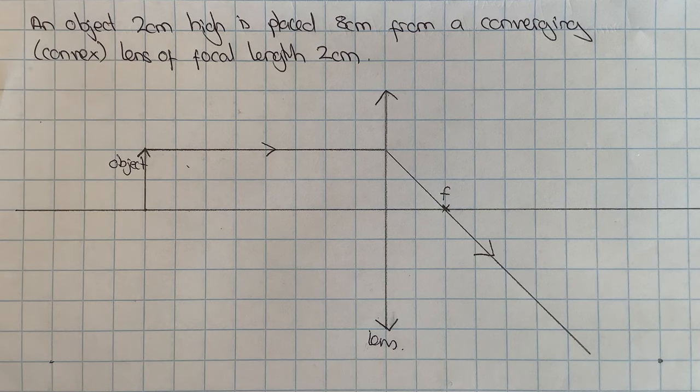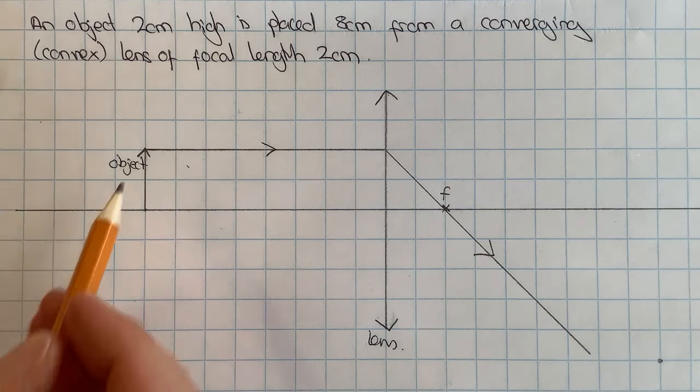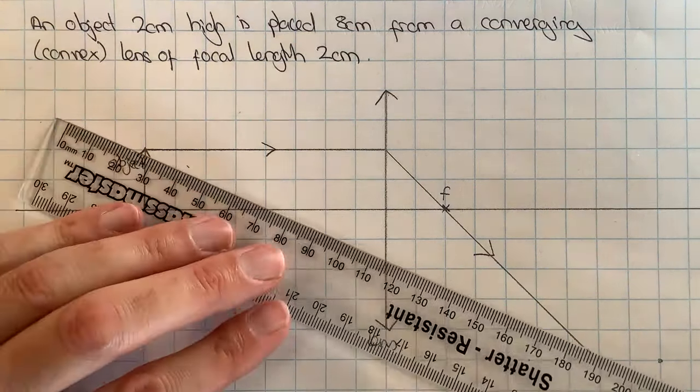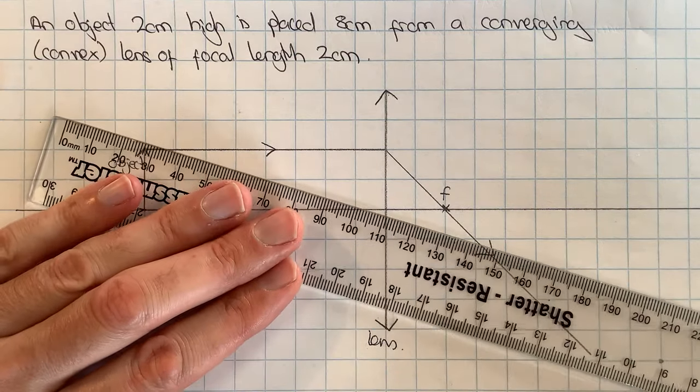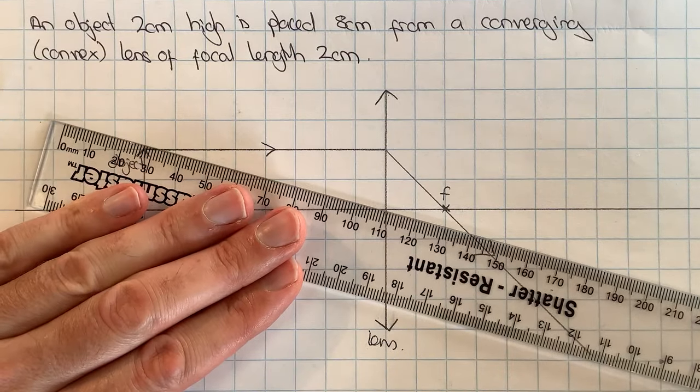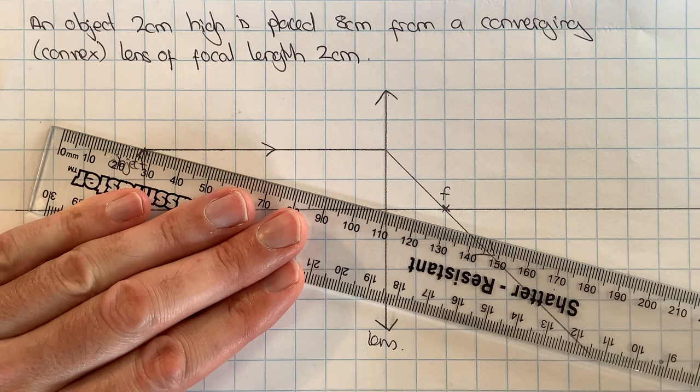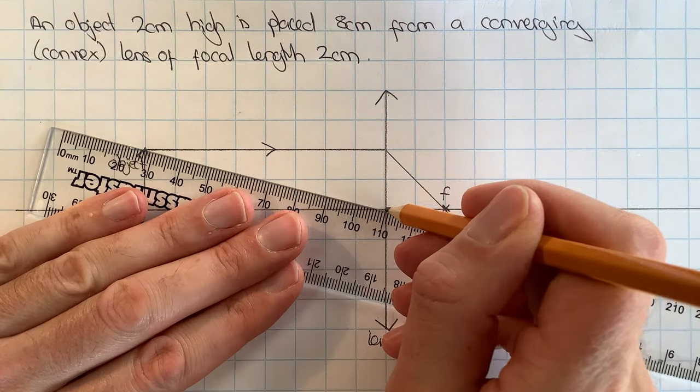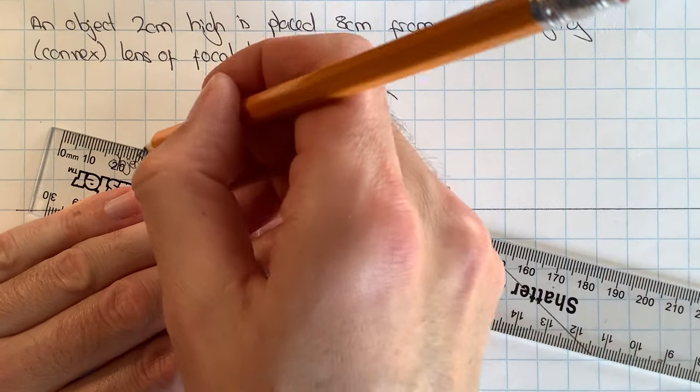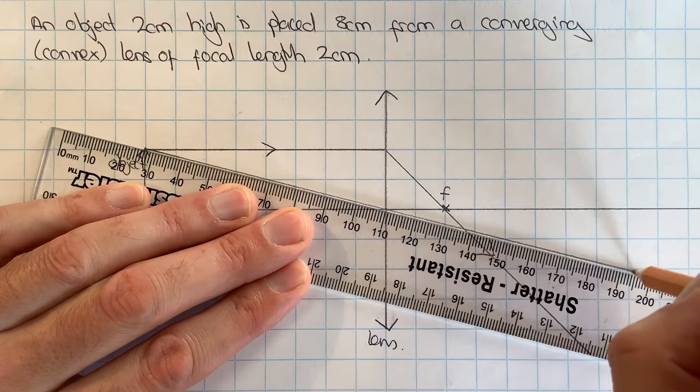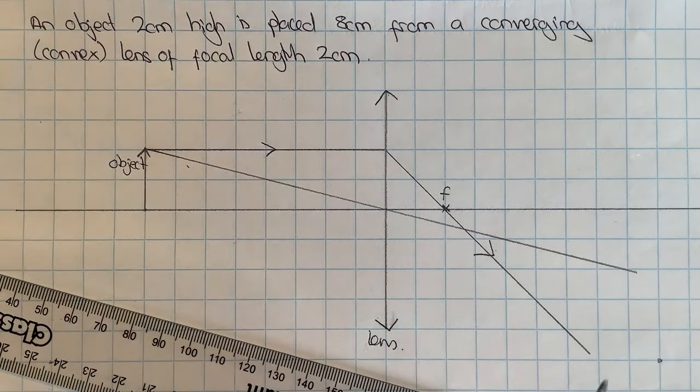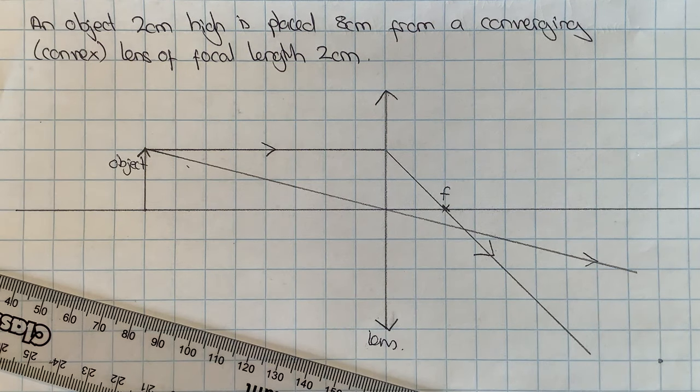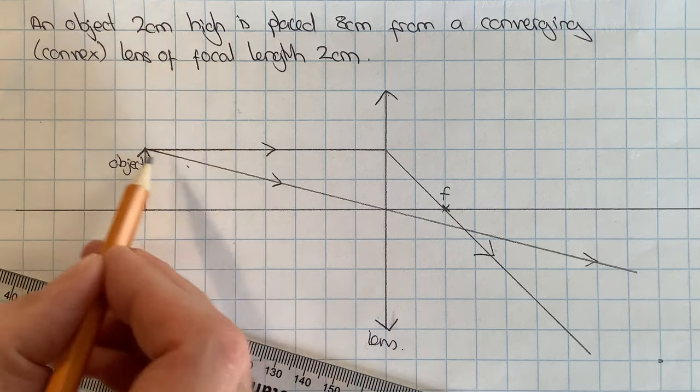Now I'm going to draw in my second special ray, which is the one that goes from the top of the object through the center of the lens. This one interestingly, when it goes right through the center of the lens, doesn't get refracted. So this is really easy to do. I just start from the top of the object to go through the center of the lens and continue in a straight line. That is my second special ray drawn, and I can put an arrowhead on that to show that the real light ray is doing that.